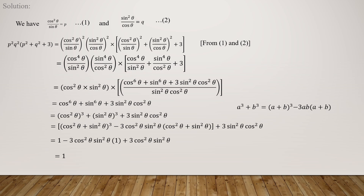Now cancel: cos⁴ divided by cos² leaves cos², and the remaining cos² cancels with sin². So cos²θ × sin²θ remains. The LCM is 3cos²θ × sin²θ.